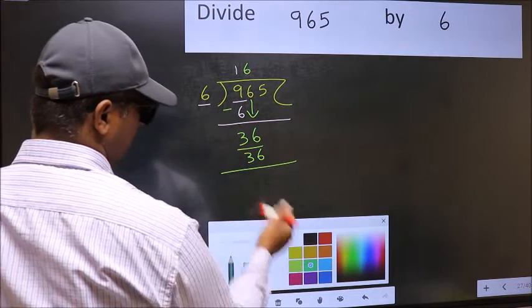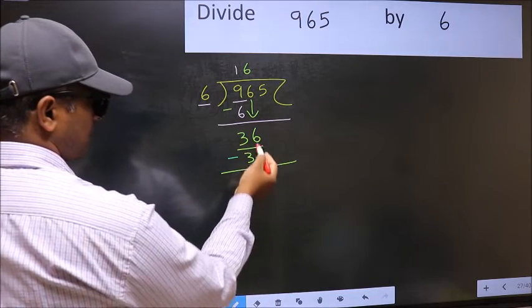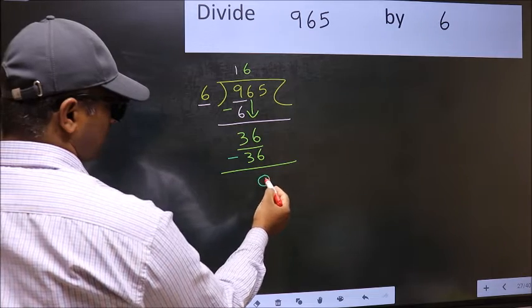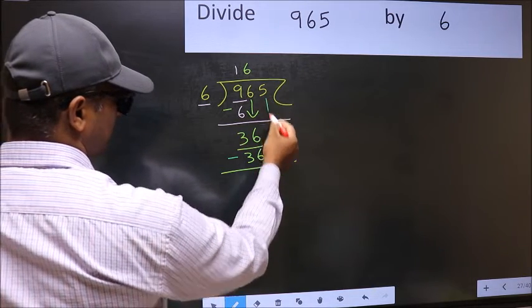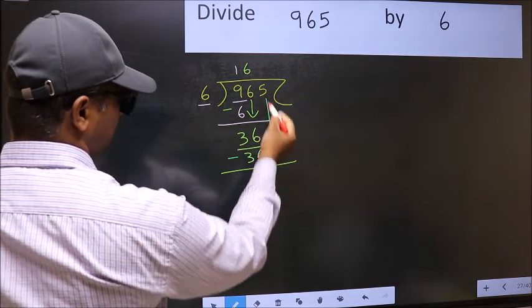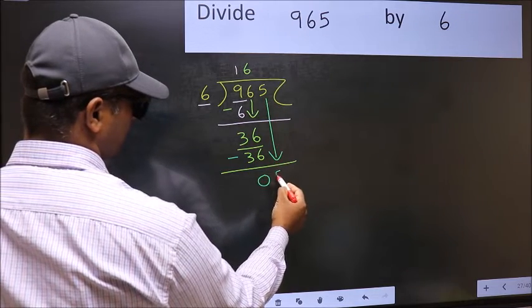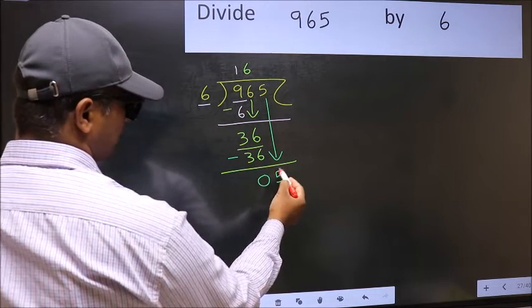Now you should subtract. 36 minus 36 is 0. After this, bring down the next number. So 5 down.